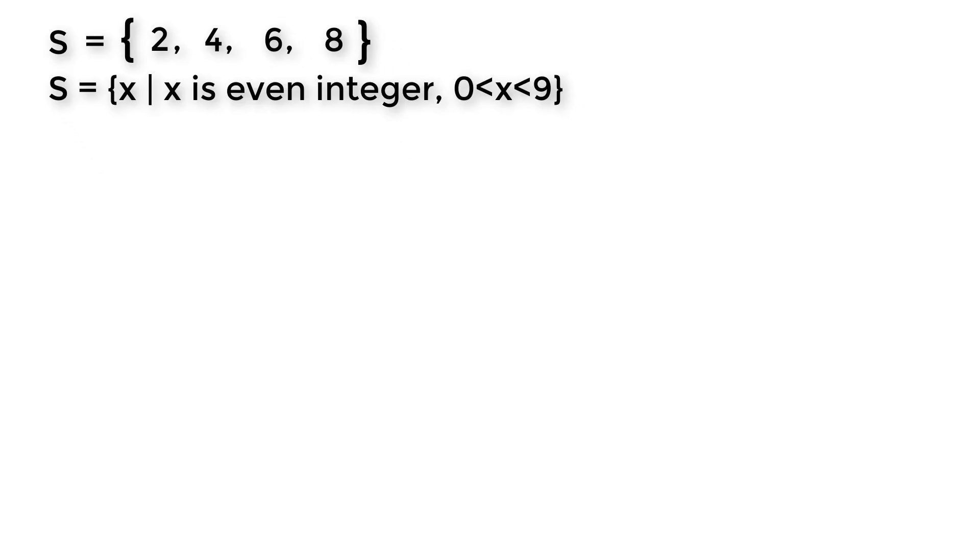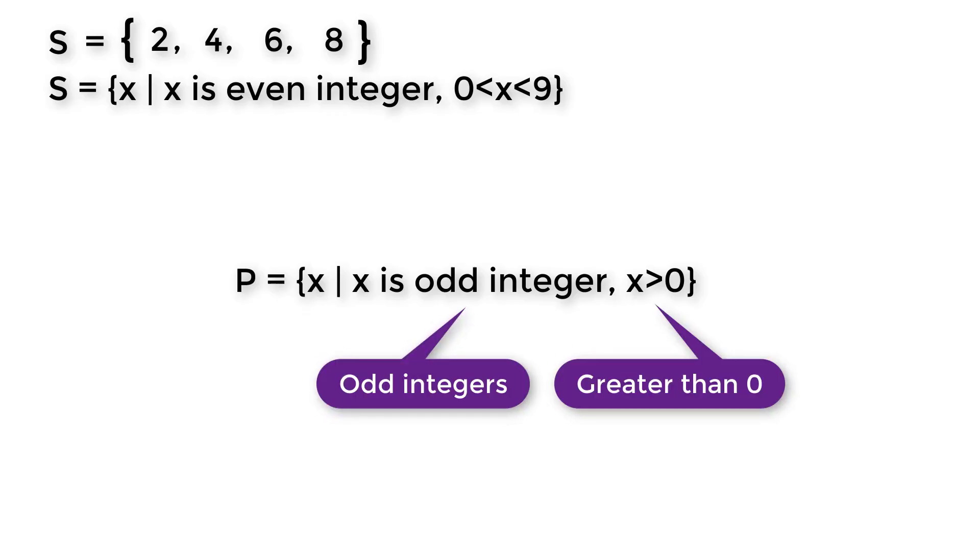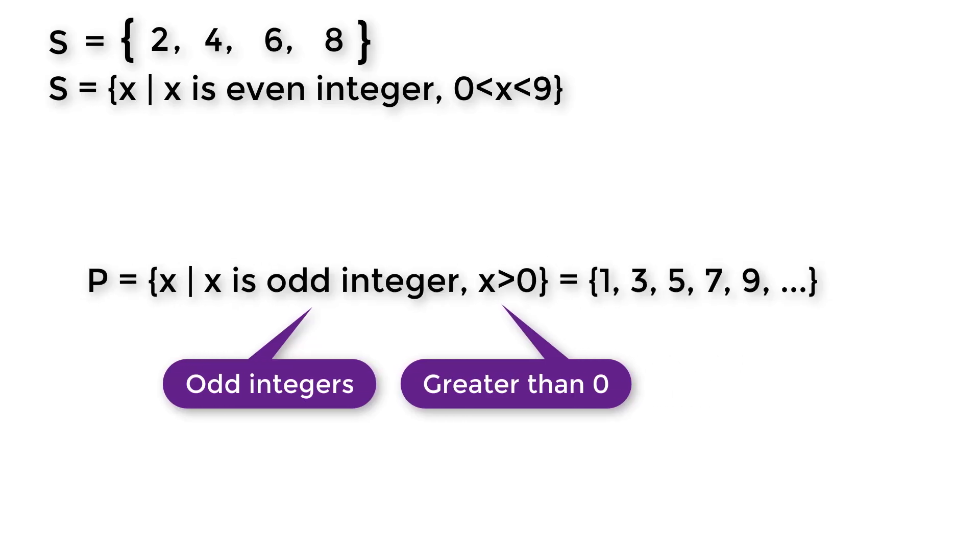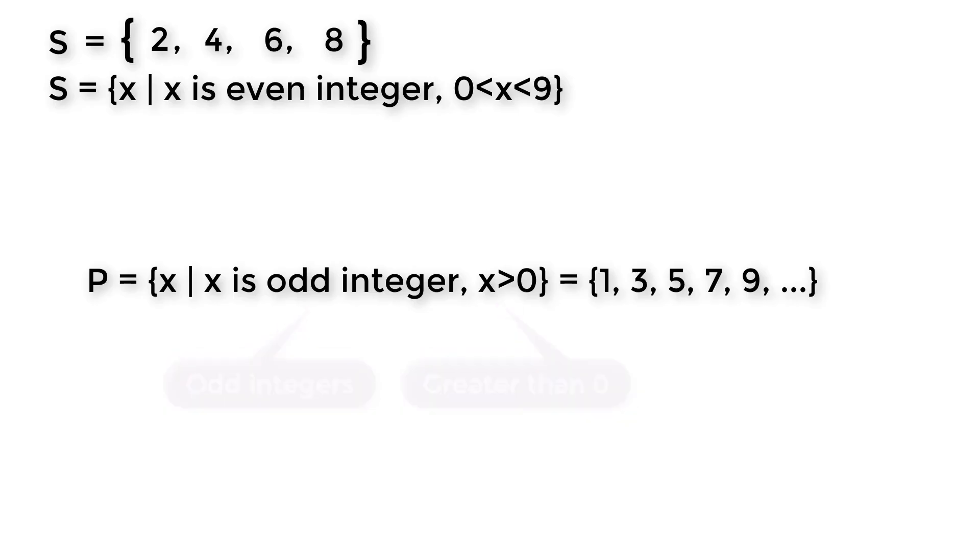Suppose a set P is a set of x such that x is odd integer and x is greater than zero. Can you express it using elements? Here are two properties: odd integers and greater than zero. That means P equals 1, 3, 5, 7, and so on. When we can assume the elements of a set, we use dots instead of making it lengthy.